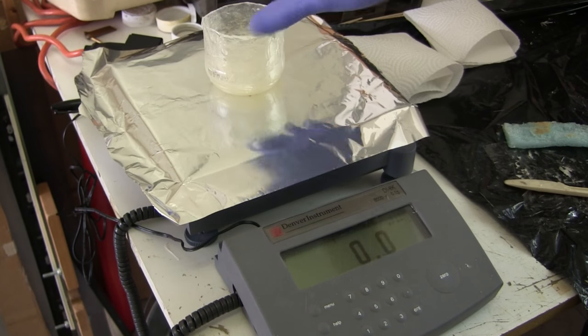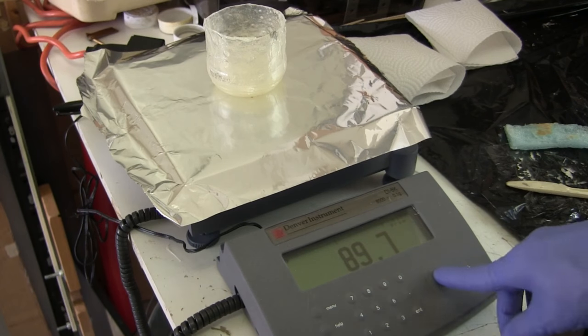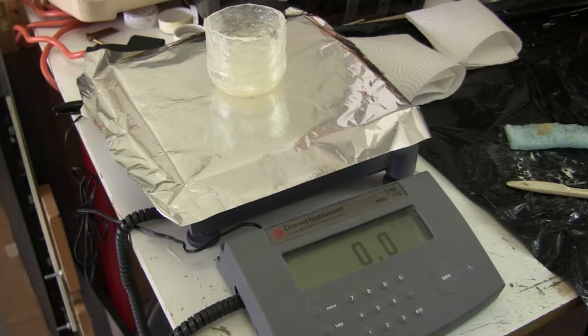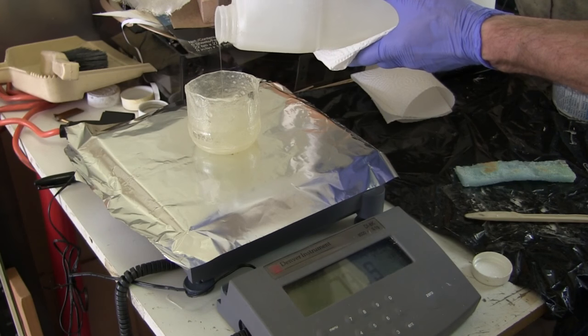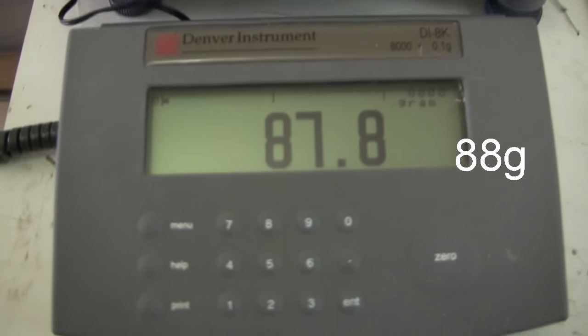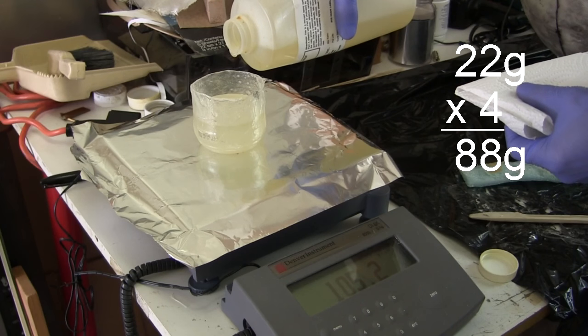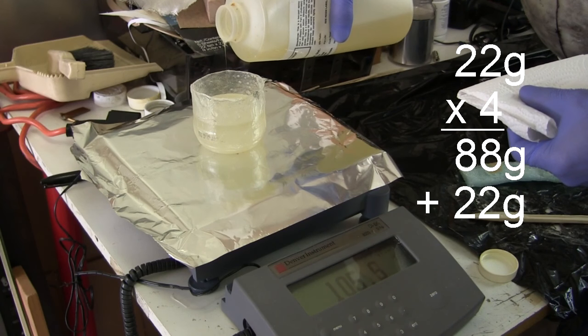So for that I bring out my digital scale. And with the empty container on the scale, I zero it out. By guessing how much I'd need for the equator pieces, I put 88 grams of resin, which is 4 times 22, and 22 grams of activator, which brings the total to 110 grams.